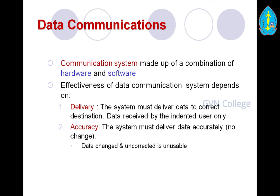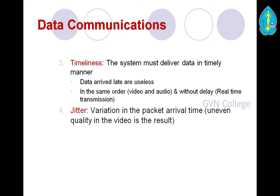The first factor is delivery. Delivery means the system must deliver data to the correct destination — data received by the intended user only. The next factor is accuracy. Accuracy means the system must deliver data accurately with no changes in the original data; data that is changed or corrupted is unusable. The third factor is timeliness. Timeliness means the system must deliver data in a timely manner; data that arrives late is useless. This applies to video and audio in the same order and without delay. Real-time transmissions are examples of without delay.